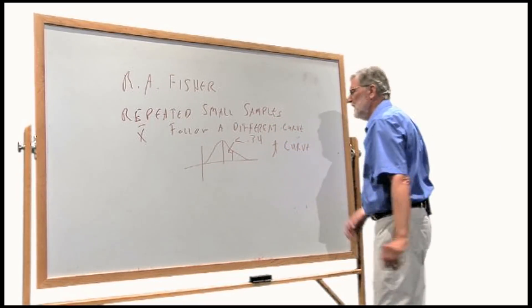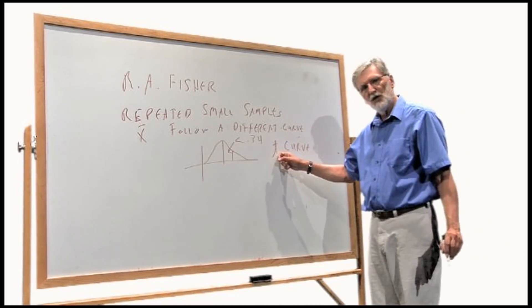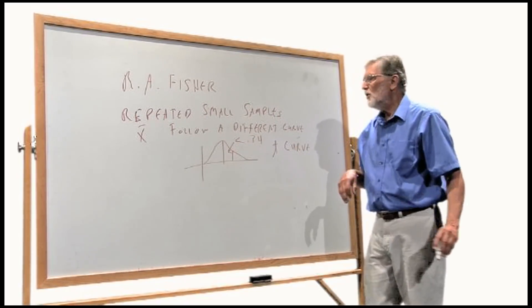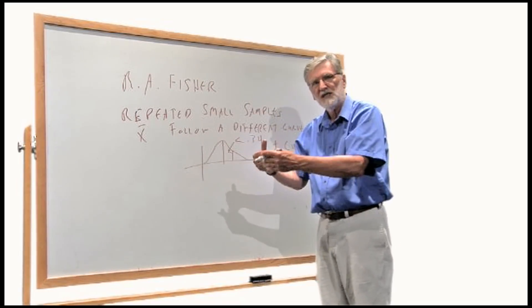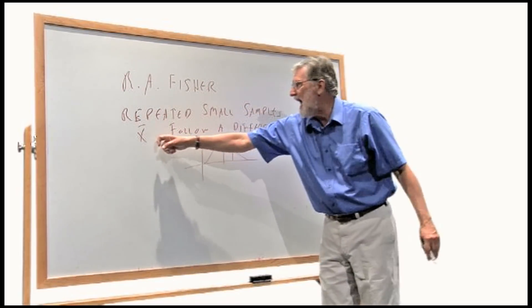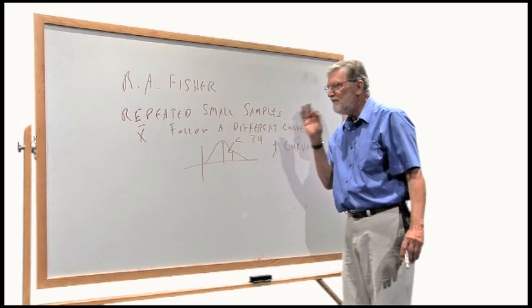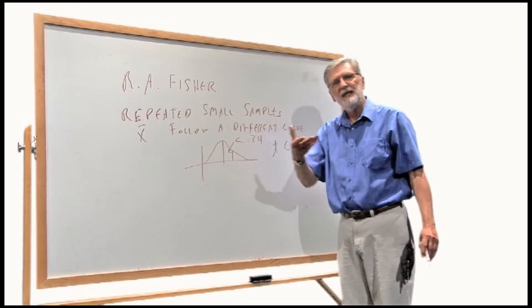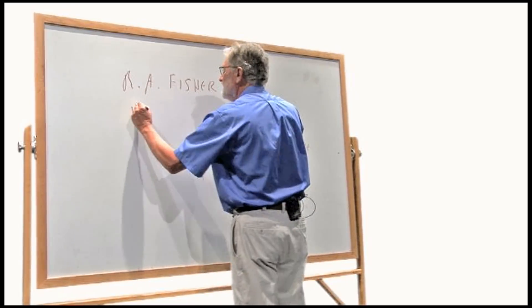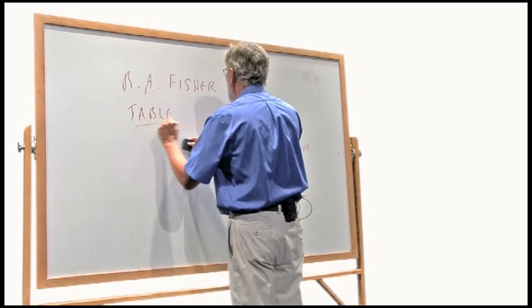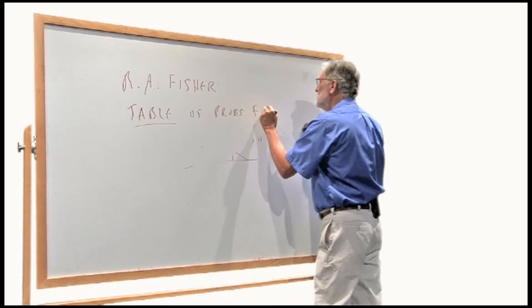This curve is called the T curve. And there's a different T curve for every sample size. So if you took samples of size 10 and averaged them, again and again, the graph of the averages would follow a certain T curve. If you picked out 15 again and again, it would be a different curve. So you need a table of probabilities for each T curve.